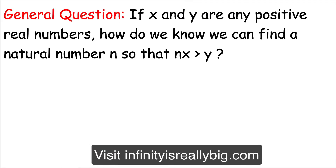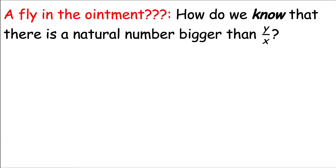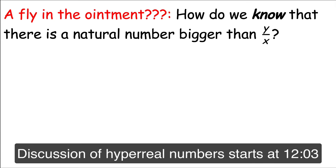Let's consider a general question: if x and y are any positive real numbers, how do we know we can always find a natural number n so that n times x is greater than y? As a possible answer, couldn't we just take the ceiling function — which rounds up to the least integer greater than a real number — and apply it to y over x? But how do we know there is a natural number bigger than y over x?